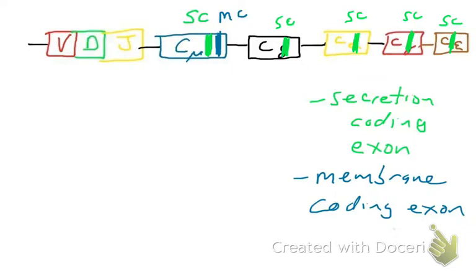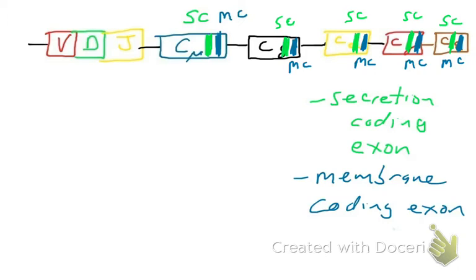It turns out all the constant regions in the heavy chain gene locus — constant delta, constant alpha, constant gamma, constant epsilon — all of them have secretion coding exons and membrane coding exons. So we'll see later that when cells switch to making IgG, they can have IgG membrane-bound on their surface or they can secrete IgG. They can have IgA on their surface or they can secrete IgA. How does a cell switch from membrane-bound to secreting an immunoglobulin? It's all about alternative splicing — choosing between the secretion coding exon and the membrane coding exon.